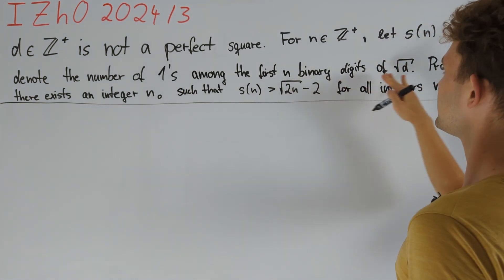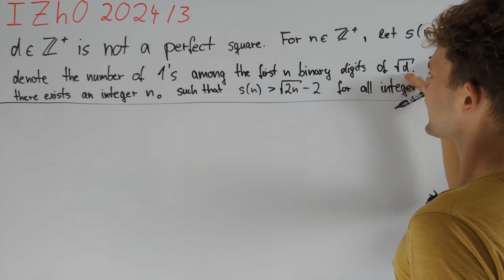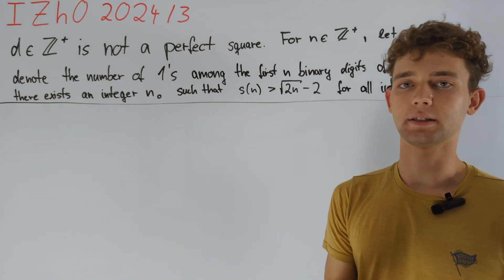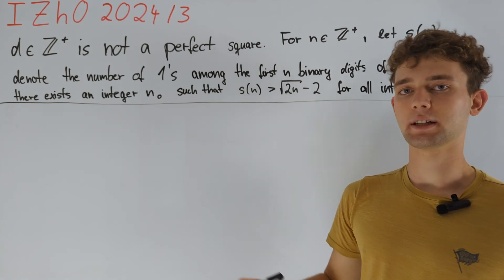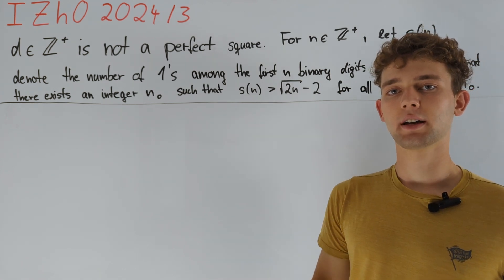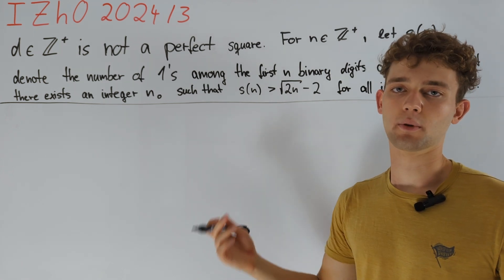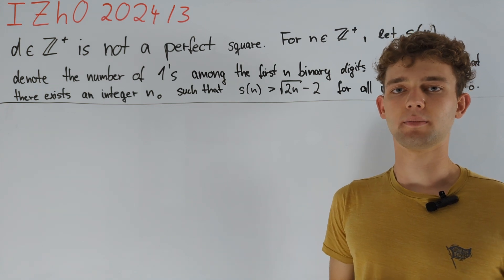Therefore, if we square the first n binary digits of square root of d we get something with a lot of ones in its binary representation, which should already imply that the first n binary digits of square root of d can't have too few ones in its representation as well.